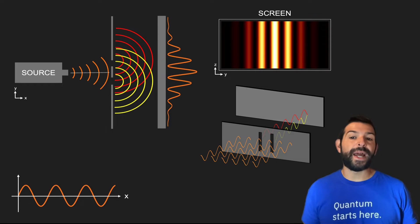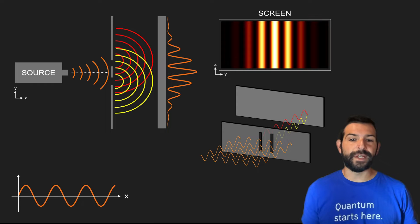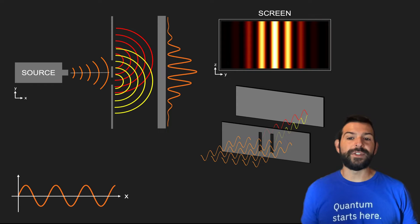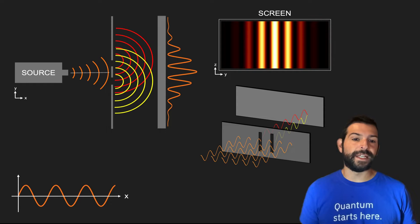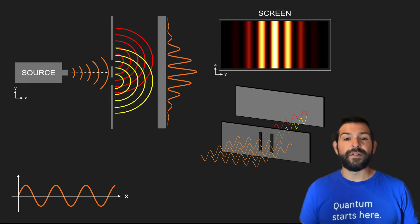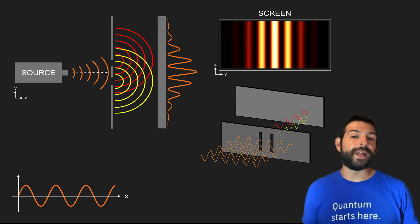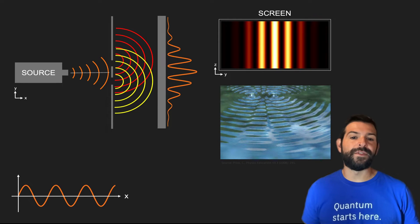What we would see at the screen is a fringe pattern of bright and dark bands. The bright bands are regions where the waves interfere constructively, and the dark bands are where they interfere destructively, canceling each other out — very much like what happens when two water waves interfere with each other.